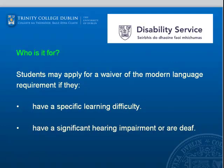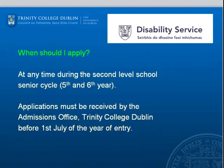Students may apply for a waiver of the Modern Language if they have a specific learning difficulty, a significant hearing impairment, or are deaf. You can apply at any time during the second level school senior cycle, i.e. fifth and sixth year. Applications must be received by the admissions office before the 1st of July of the year of entry into college.